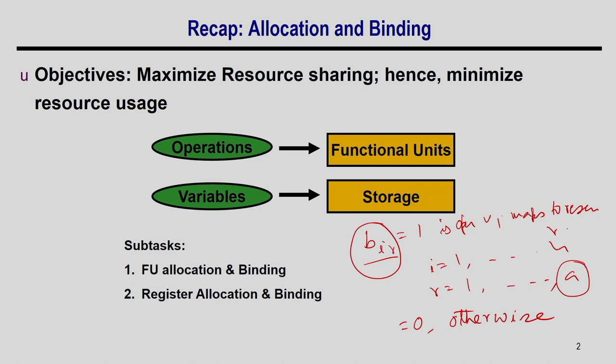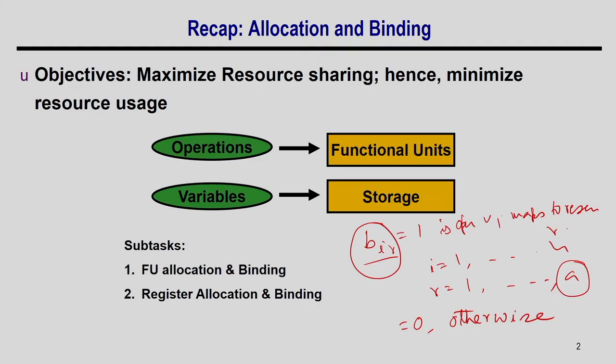In cases like minimum latency under resource constraint (MLRC), the upper limit of resources is given, so A is a constraint — we know the number of FUs. The ILP then gives the BIR values — the mapping of operations to resources. We find the value of BIR using ILP.